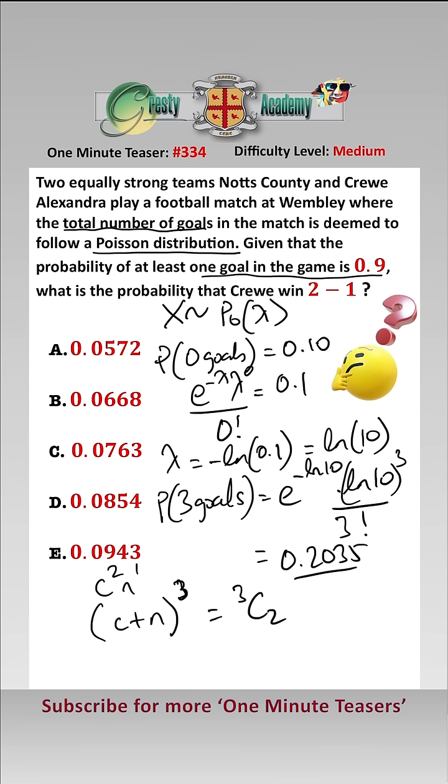Dividing it by the number of possibles, which is 2 cubed, gives us an answer of 0.2035 times 3c2 over 2 cubed, which equals 0.0763, which is answer c.